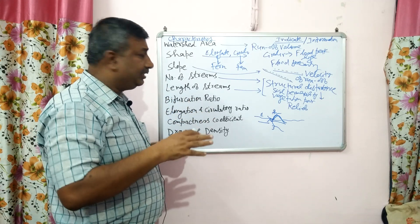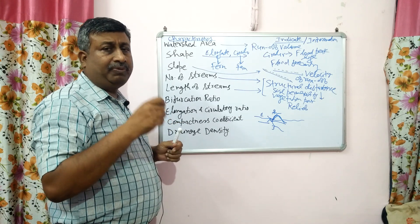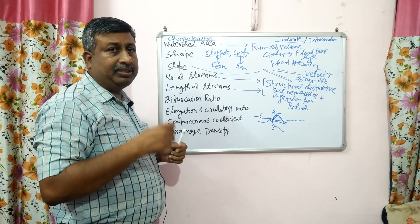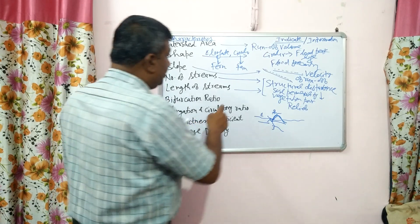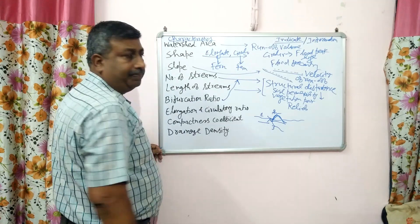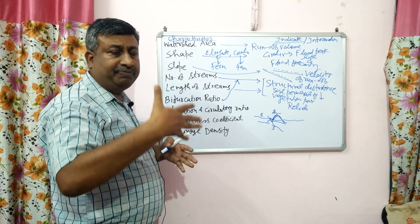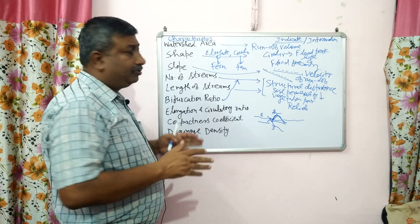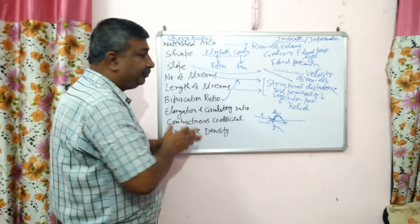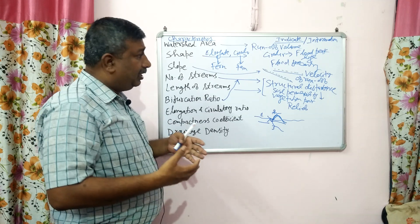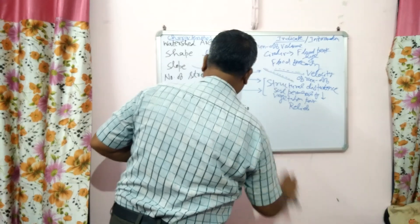Bifurcation ratio is influenced by stream length and number of streams. Bifurcation ratio is calculated as the number of streams of first order divided by number of streams of second order, and similarly for higher orders. If bifurcation ratio is high, it means the number of streams are more. This bifurcation ratio reflects the impact of structural disturbances, soil permeability, poor vegetation, and relief. High bifurcation ratio means more branching of streams. Please watch the video on bifurcation ratio in watershed for more details.